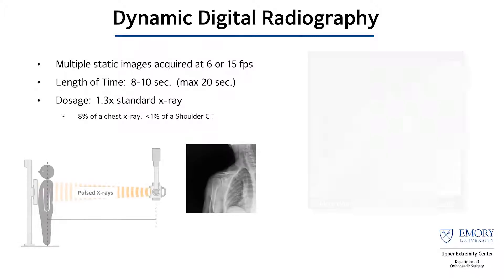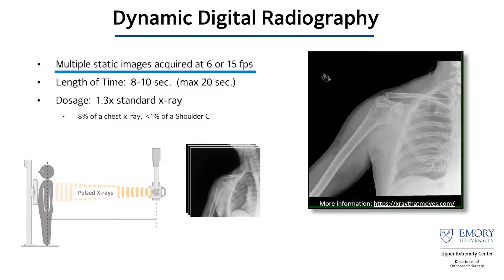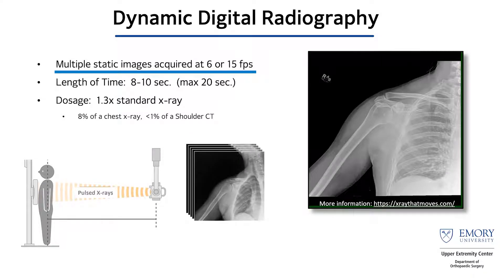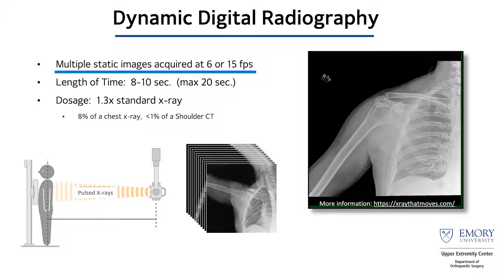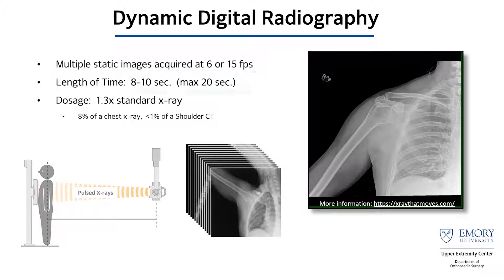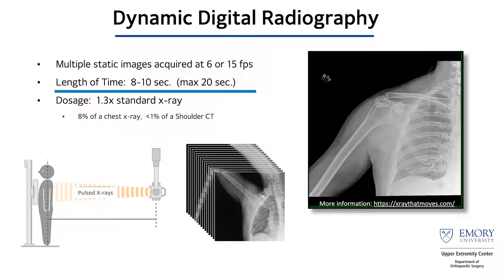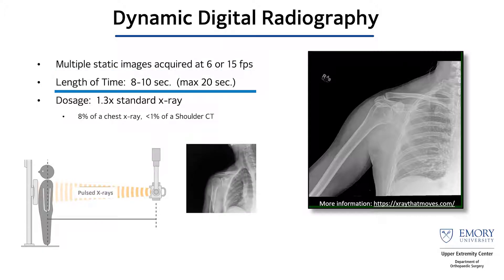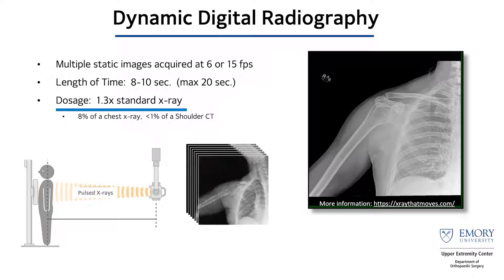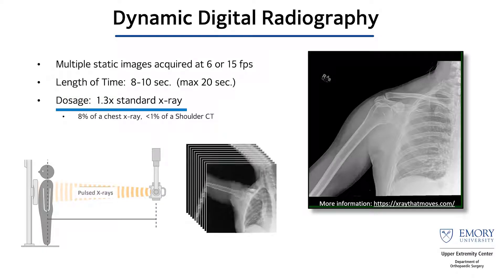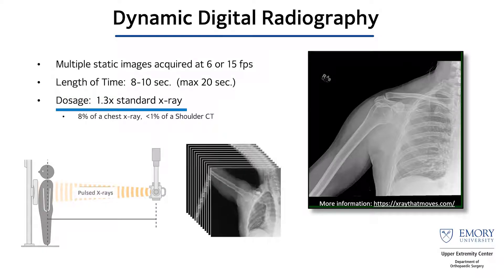DDR — so what is it? It's basically multiple static images acquired at either 6 or 15 frames per second, over a length of time of approximately 8 to 10 seconds, with an average dosage only about 1.3 times greater than the standard x-ray.